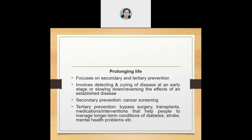And what about tertiary prevention? There could be many kinds of interventions or medications that help people manage long-term conditions of ailments like diabetes, stroke, or other mental health problems. Any kind of intervention to prevent further deterioration — examples could be bypass surgery, transplants, or any other kind of medications — all comes under tertiary prevention.